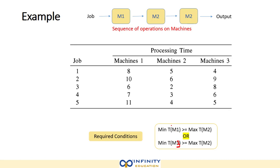So which is the minimum one? The minimum of M1 is 6. The maximum on M2 is also 6. So 6 greater or equal to 6, this condition is satisfied.